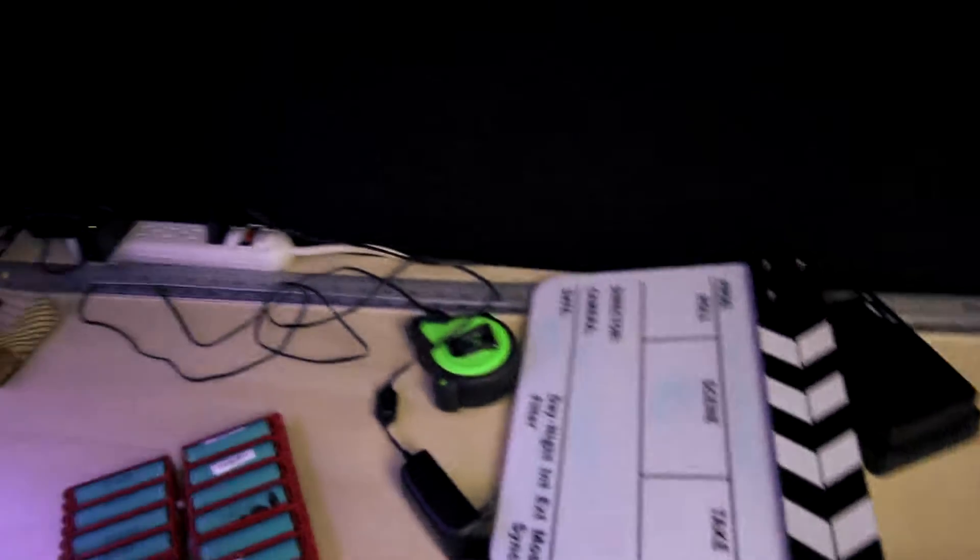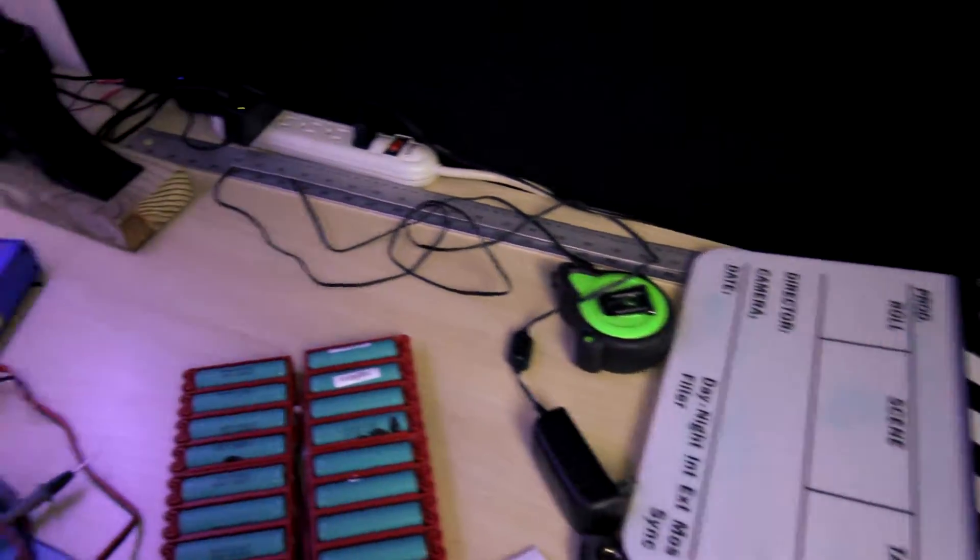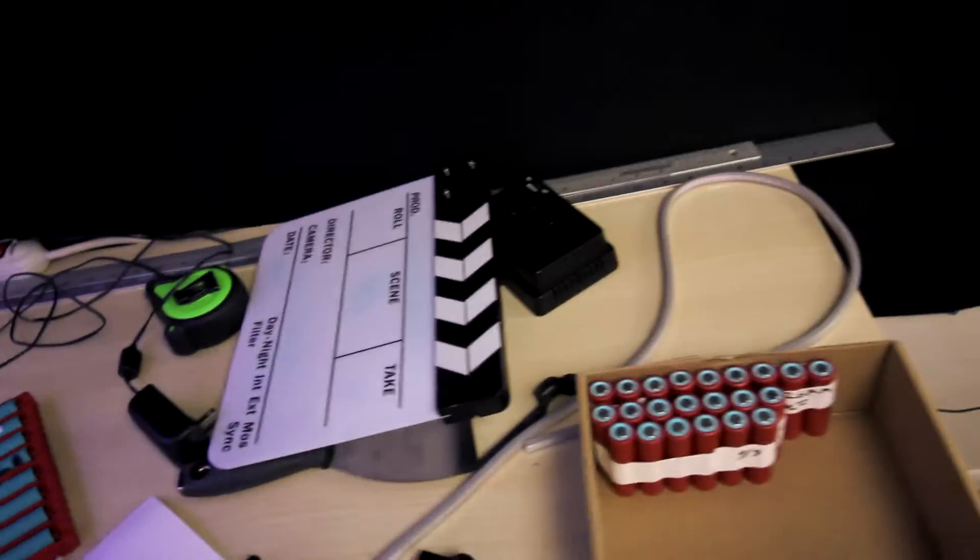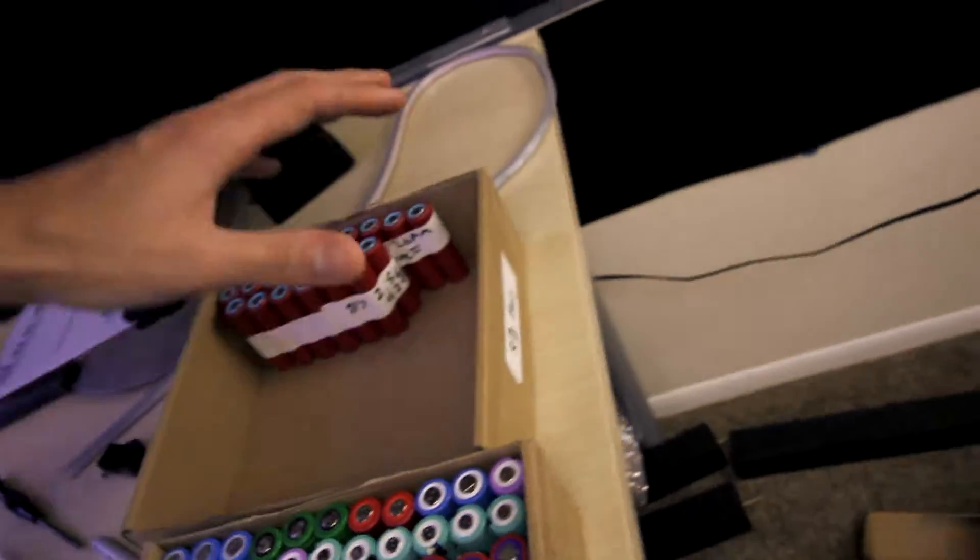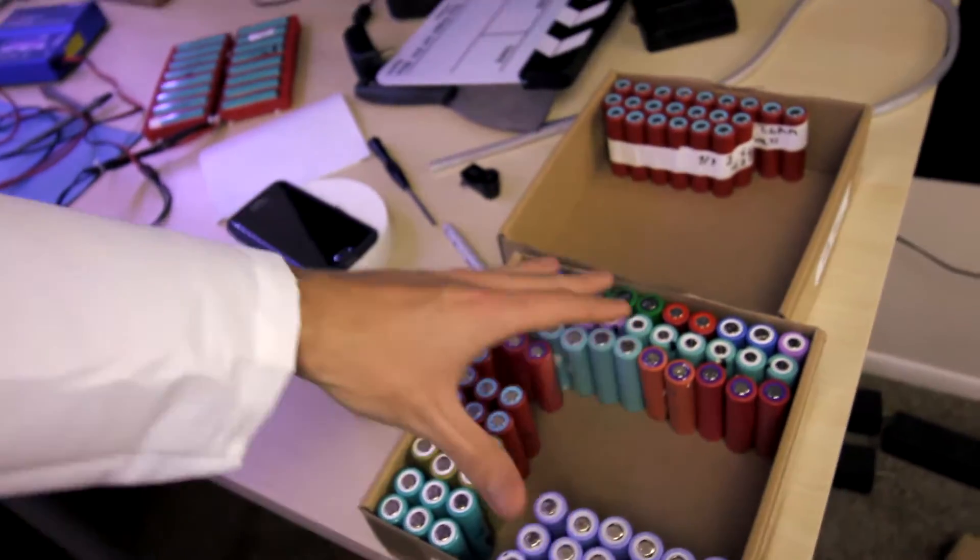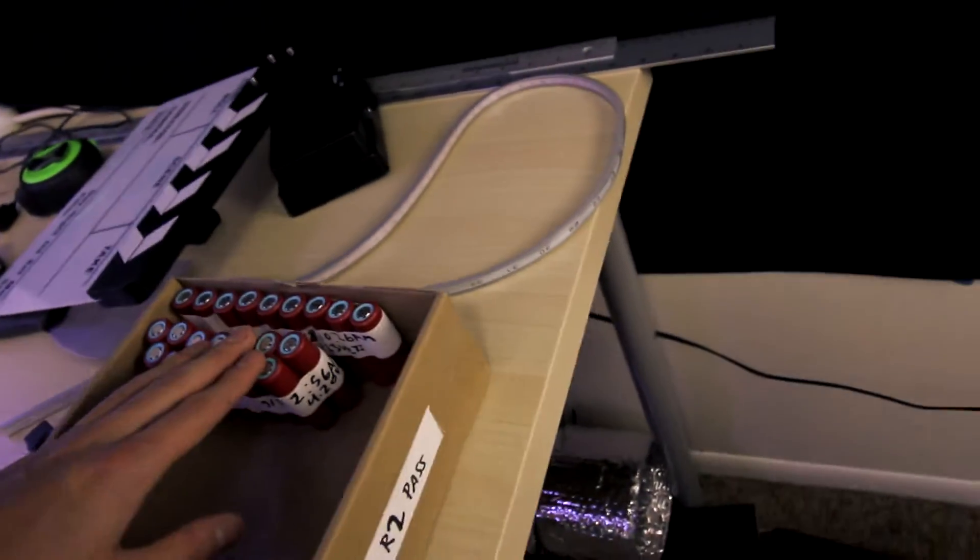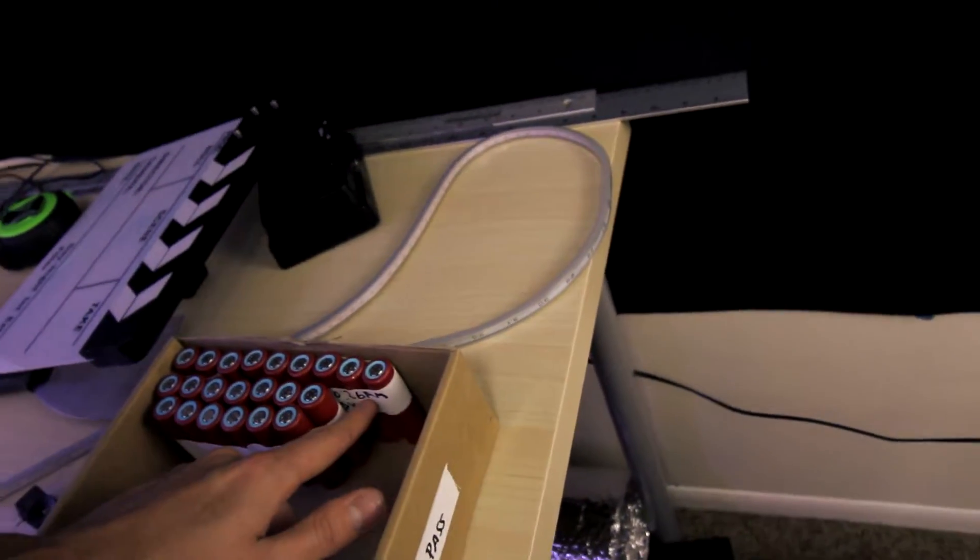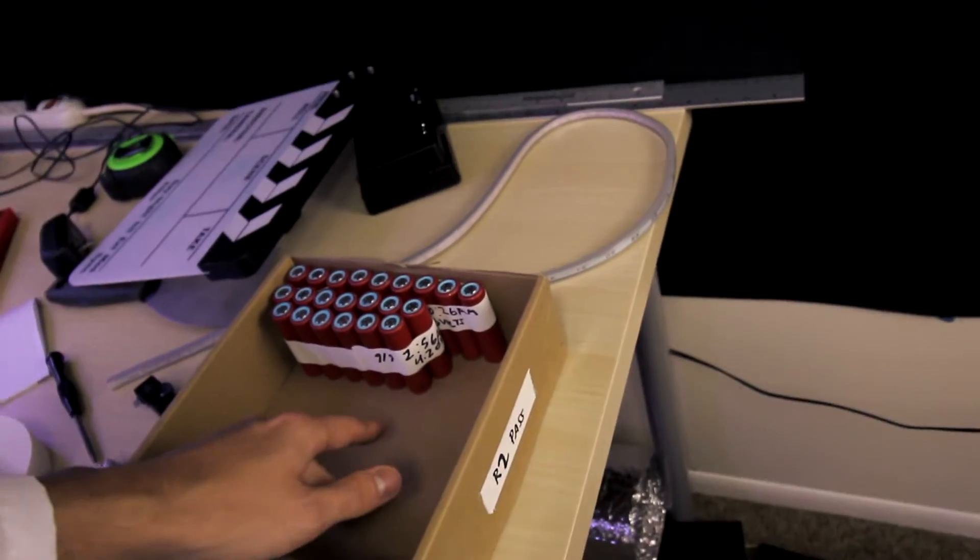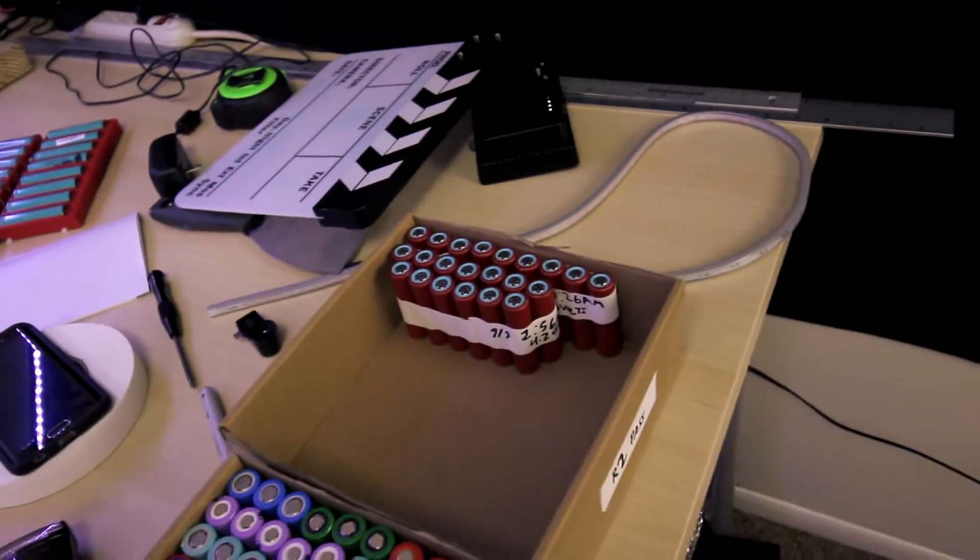When I have a successful set of cells after this thing is done charging I go ahead and tape them together and put them in another box here. So these are the cells that pass round one. These are the cells that pass round two which is the initial slow charge test and I note the date and the time of extraction along with the voltage that I got from those cells because I measure them again with my multimeter.